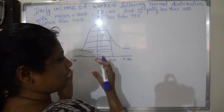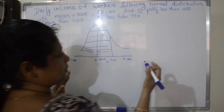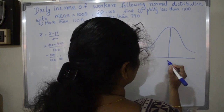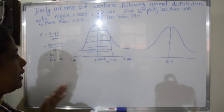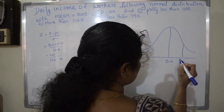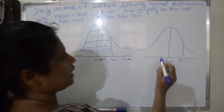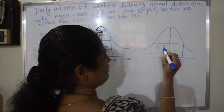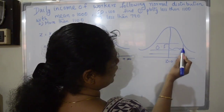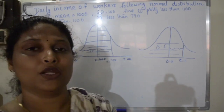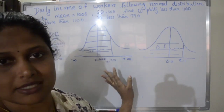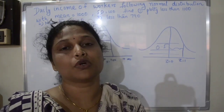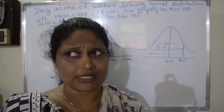We now have Z equals 1. Looking at the standard normal distribution curve, the center is always at Z equals 0. For Z equals 1, which corresponds to x equals 1,100, this area from the center to Z=1 can be looked up in the Z-table.